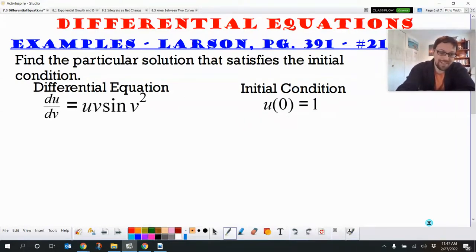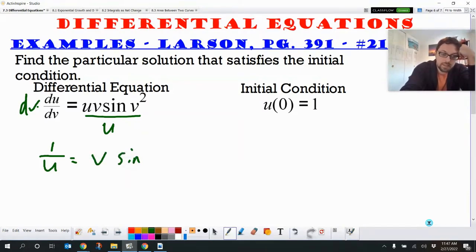So we're going to divide this side by u. And then we need to multiply this side by dv. So we get 1 over u du equals v sine of v squared dv.